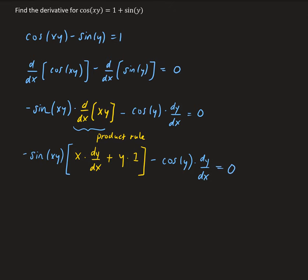We need to simplify this, then go ahead and isolate dy/dx. I'm going to distribute the minus sine xy term, so we're going to have minus x times sine xy times dy/dx, minus y times sine xy, and then minus cosine y dy/dx equals 0.